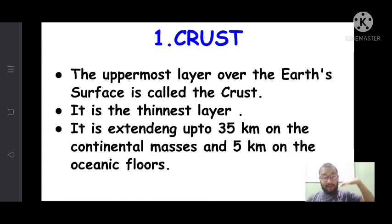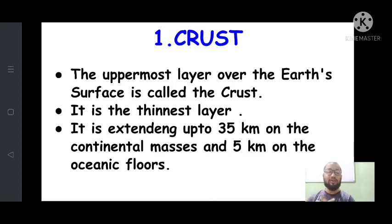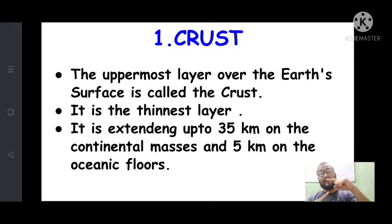Inside the ocean, there is also a crust layer. In the continental part — meaning hills, mountains, or plain areas — the crust extends from sea level to 35 kilometers. In the oceanic crust, it is only 5 kilometers. Always remember that depth is measured from sea level. Sea level is regarded as zero, and below it the depth increases: one kilometer, two kilometers, three kilometers, and so on.